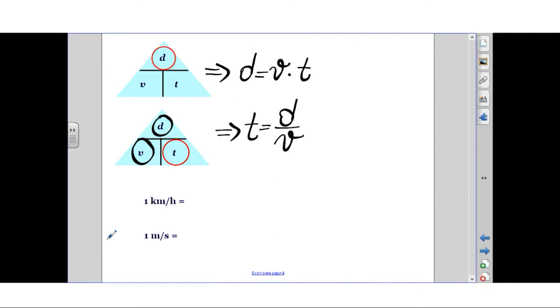We recall that 1 km/h can be transformed to m/s by dividing by 3.6, and 1 m/s can be transformed to km/h by multiplying by 3.6.